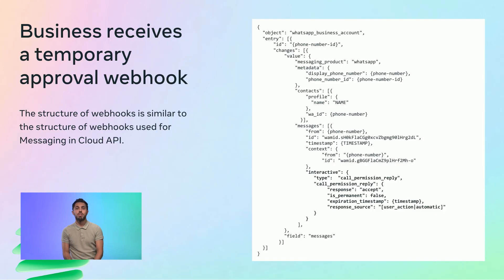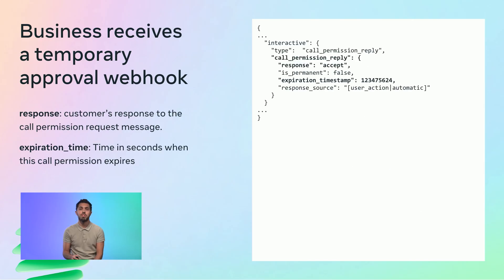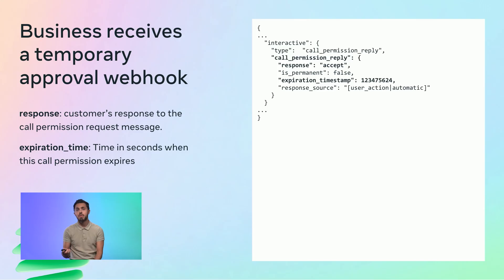Once the user responds to the call permission request, the business will receive a webhook with the response, structured similarly to messaging webhooks in Cloud API. The webhook contains a changes array with a value object and a messages array containing the interactive object. This object contains the user's reply: its type parameter will be set to call_permission_reply. The response parameter indicates the user's choice — either accept or reject — and the expiration_time parameter contains the time in seconds when the permission expires.